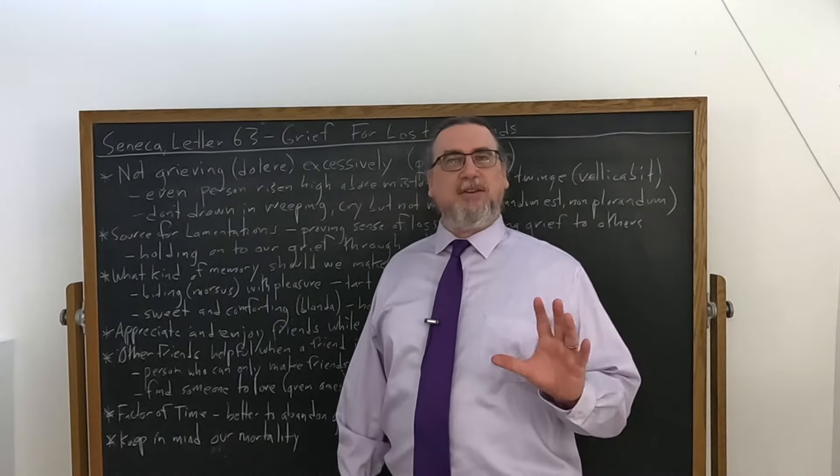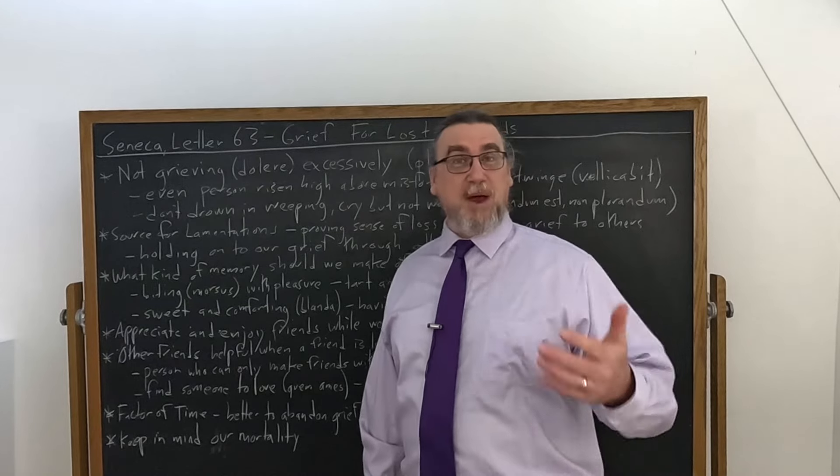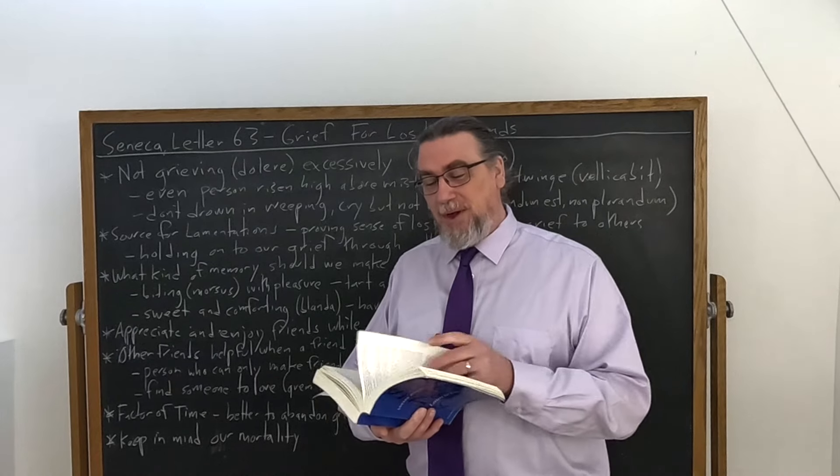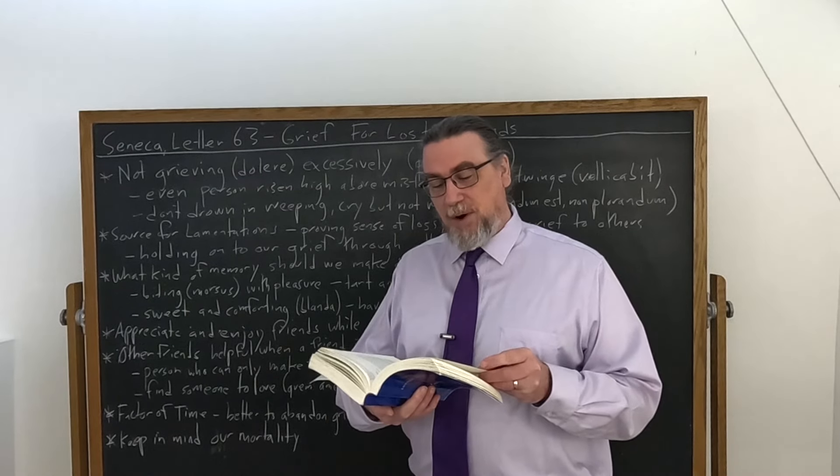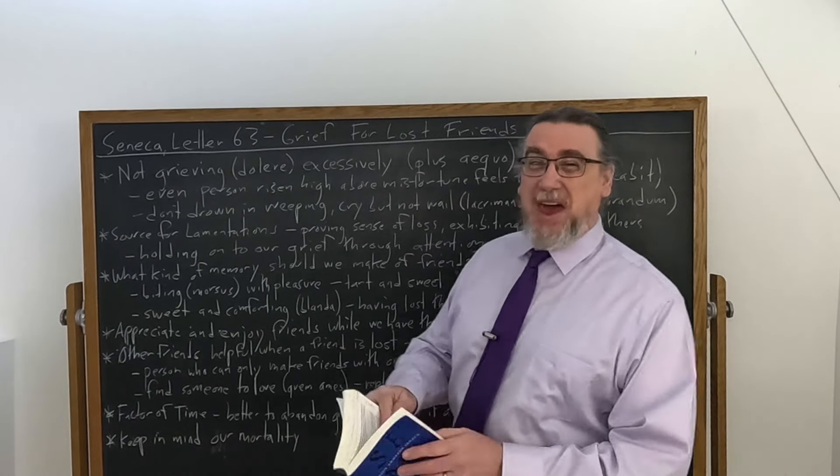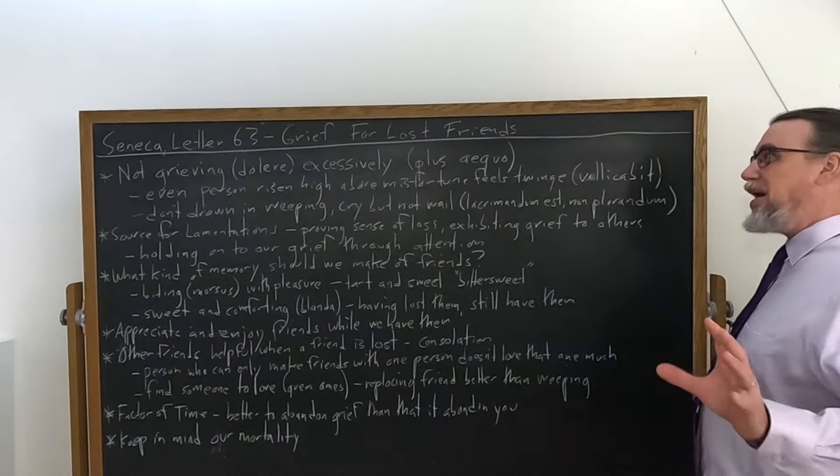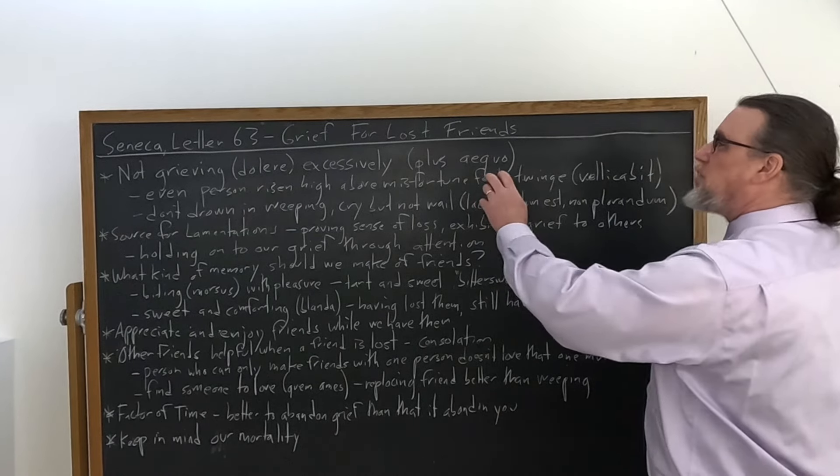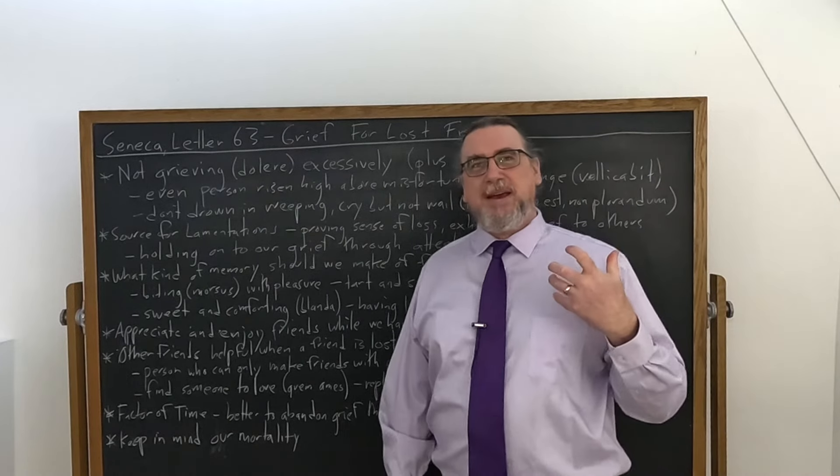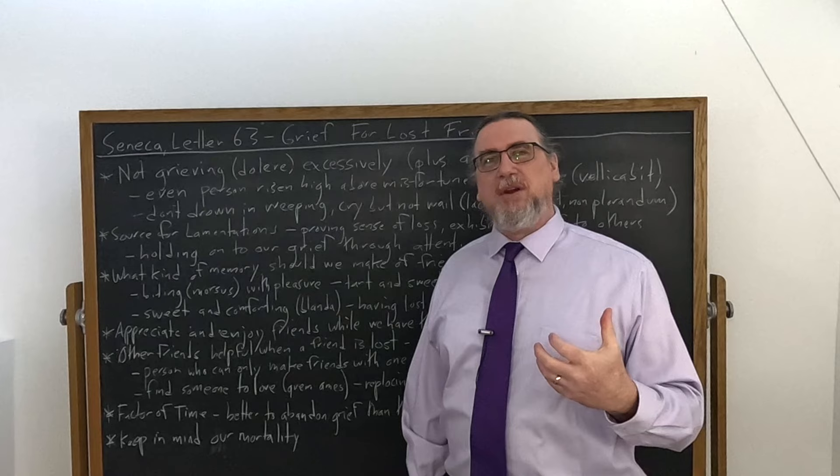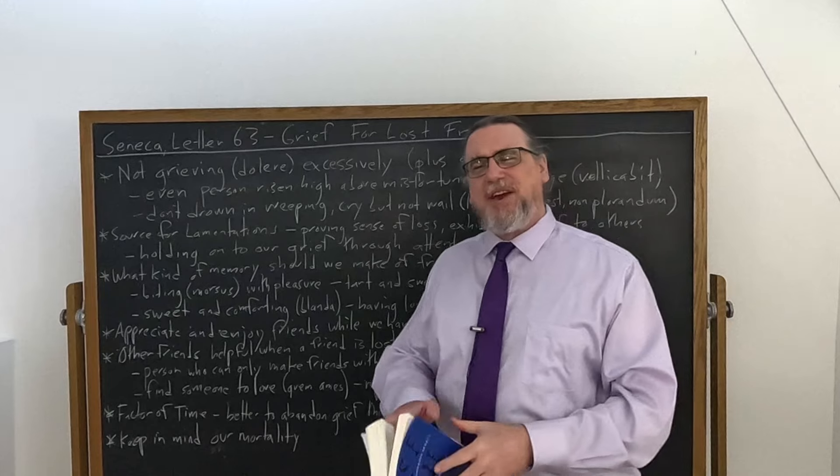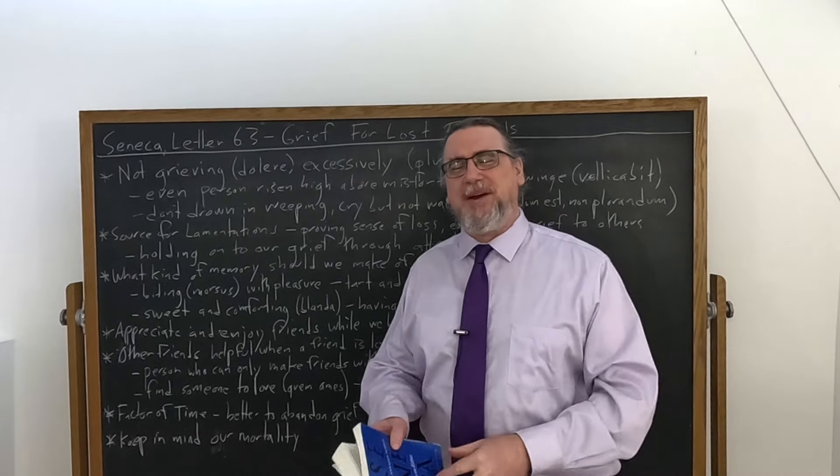And notice the key term here. Seneca is not saying, I'm not going to tell you to grieve at all. As a matter of fact, he'll even bring up towards the end of the letter, his own example of grieving for his beloved Aeneas Serenus, and he actually says, I did that excessively myself, so I understand this. He says, I don't want you to grieve plus I quo, more than is the right amount, more than it is proportionate.